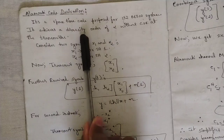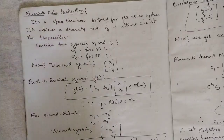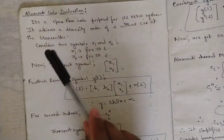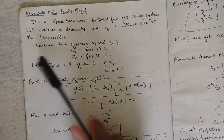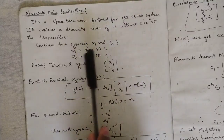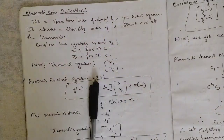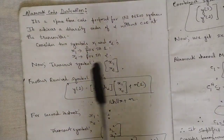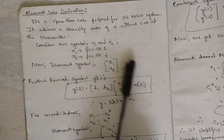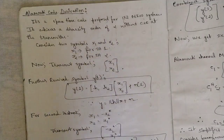The Alamouti code achieves a diversity order of two without CSI at the transmitter. This is the basic diversity order equation which you need to note down. With respect to two symbols, you need to consider two symbols X one and X two. X one is for transmitting antenna one and X two is for transmitting antenna two. As there are two transmitting antennas, X one and X two are the two symbols. The transmit symbol can be represented in the form of a matrix as X one, X two.